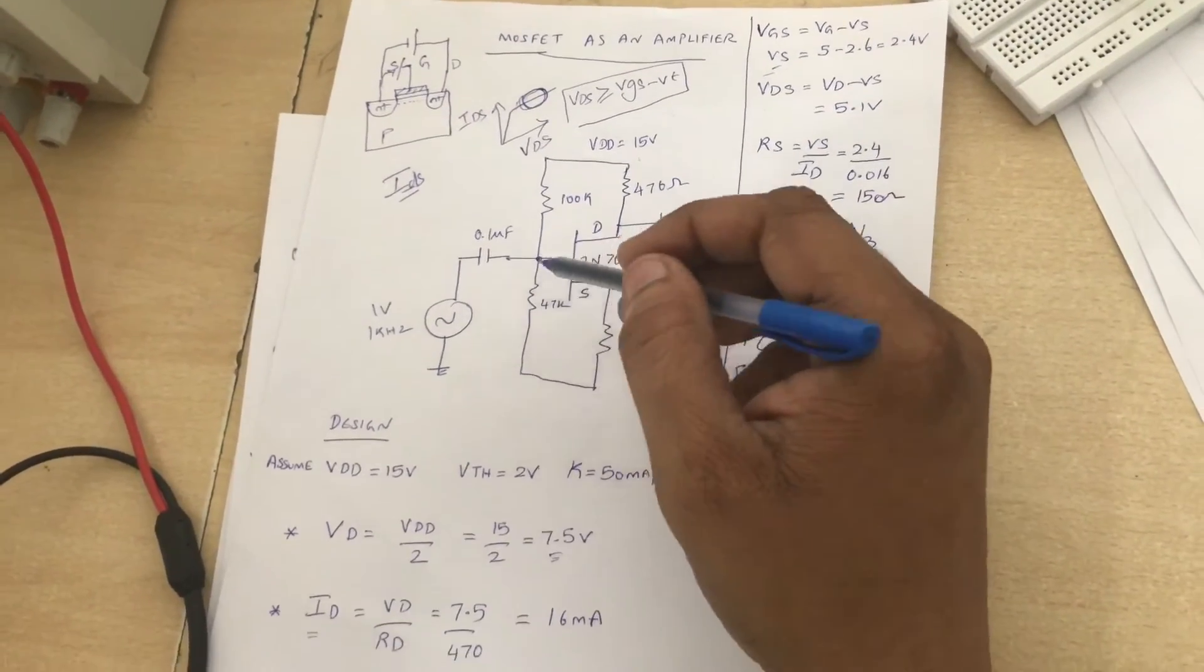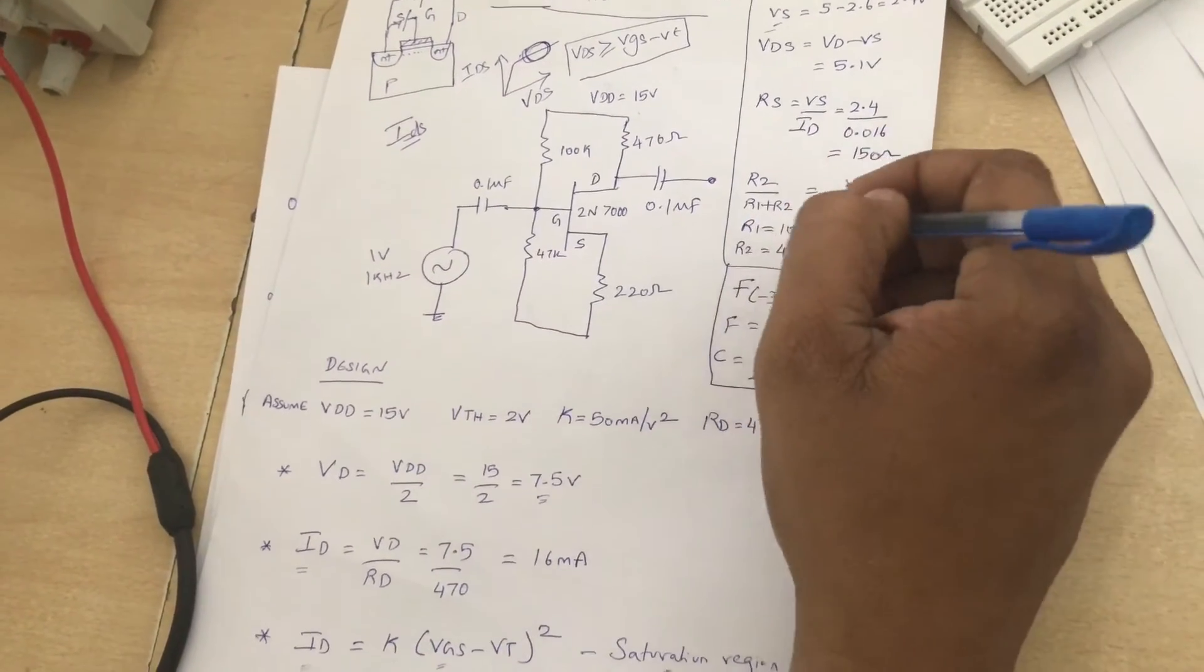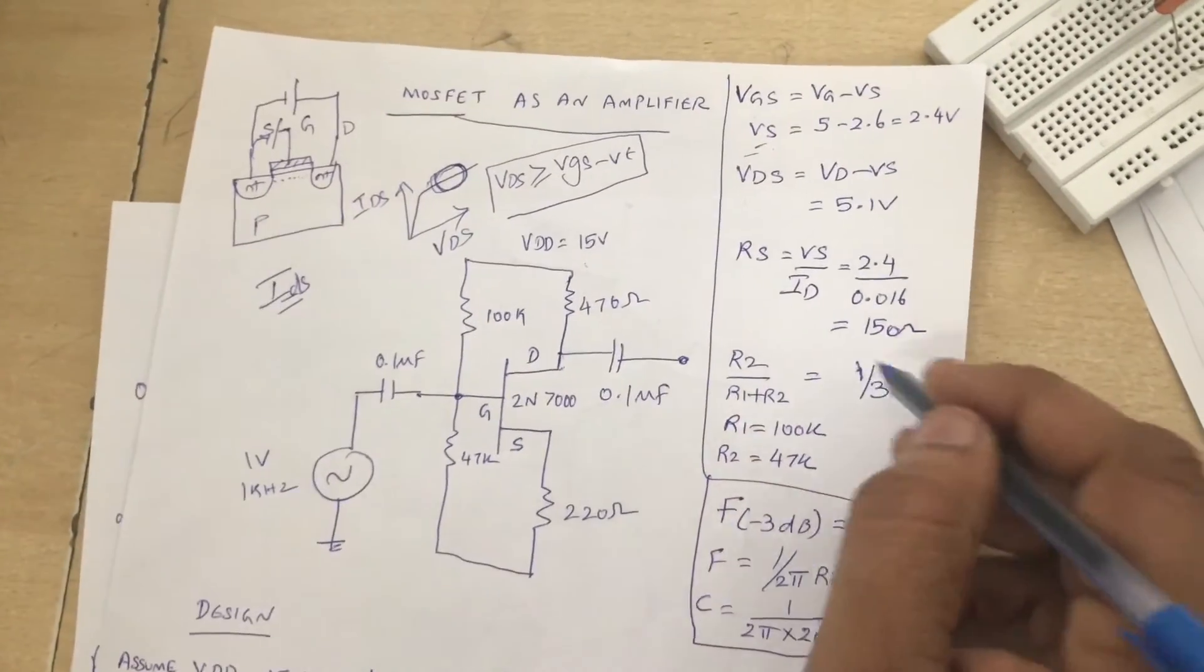Since the gate current is zero, we can assume a large value of resistor. So R1 equals 100k and R2 equals 47k, which gives me approximately the ratio 1/3 for R2 by (R1 plus R2).